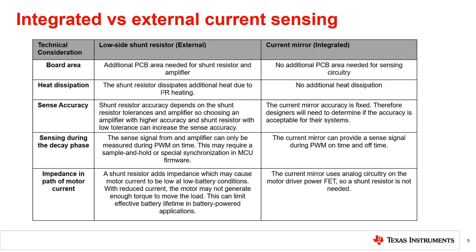The sensing method described previously uses a shunt resistor in the low side of the H-bridge between the sources of the bottom FETs and the ground path. This sensing method is often referred to as external current sensing, since the shunt resistor is not integrated in the motor driver IC. There is another sensing method called integrated current sensing, which integrates a current mirror in the driver IC to measure the motor current, eliminating the need for a bulky shunt resistor.